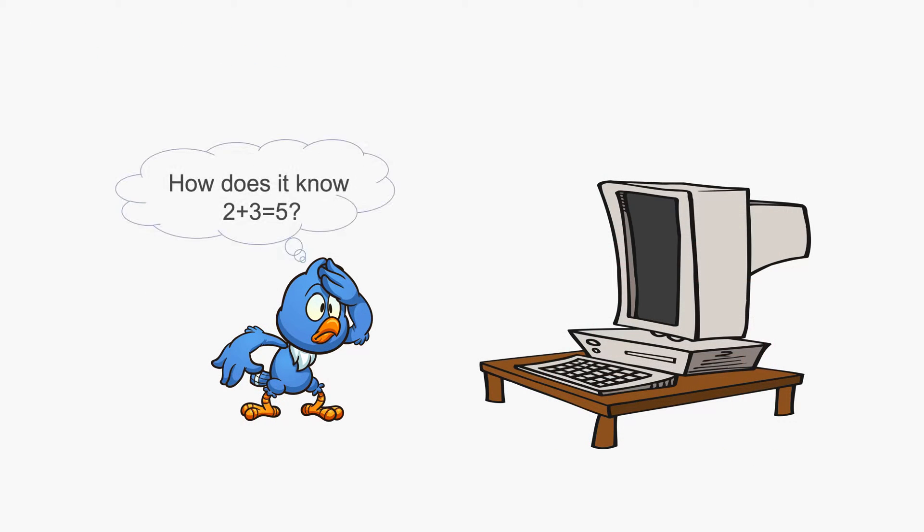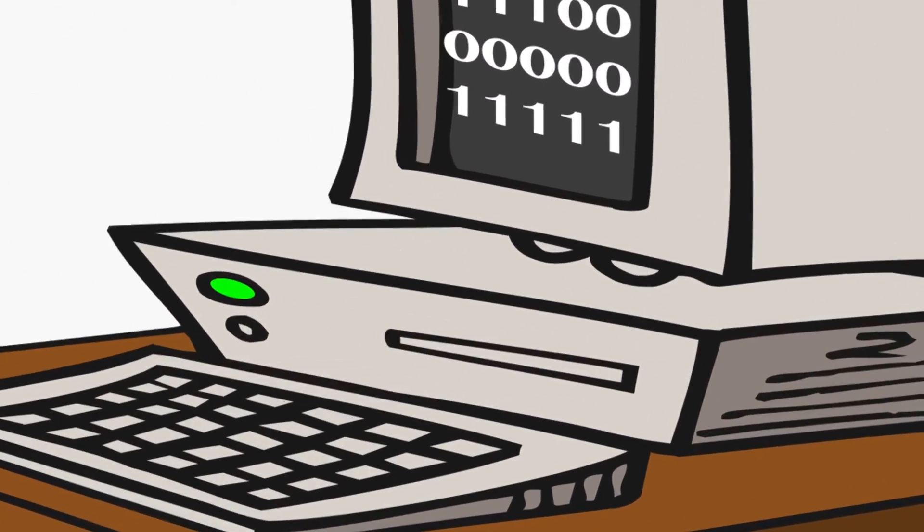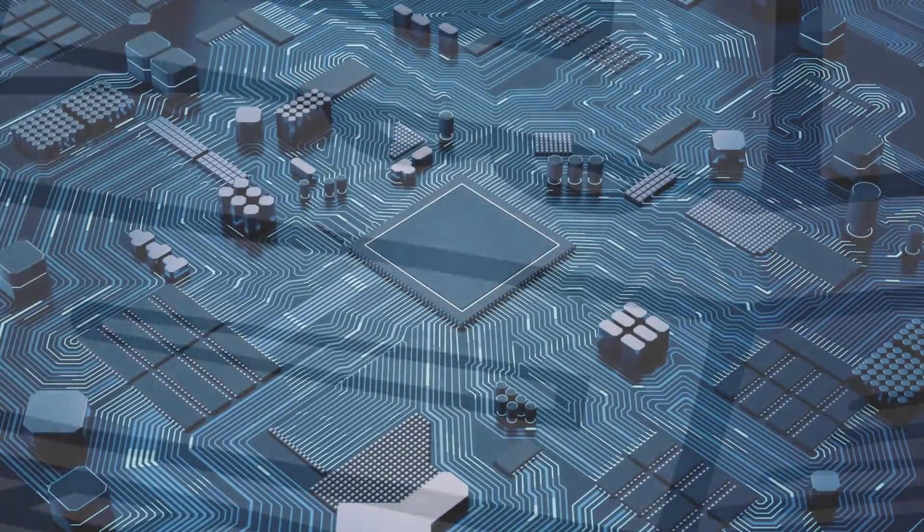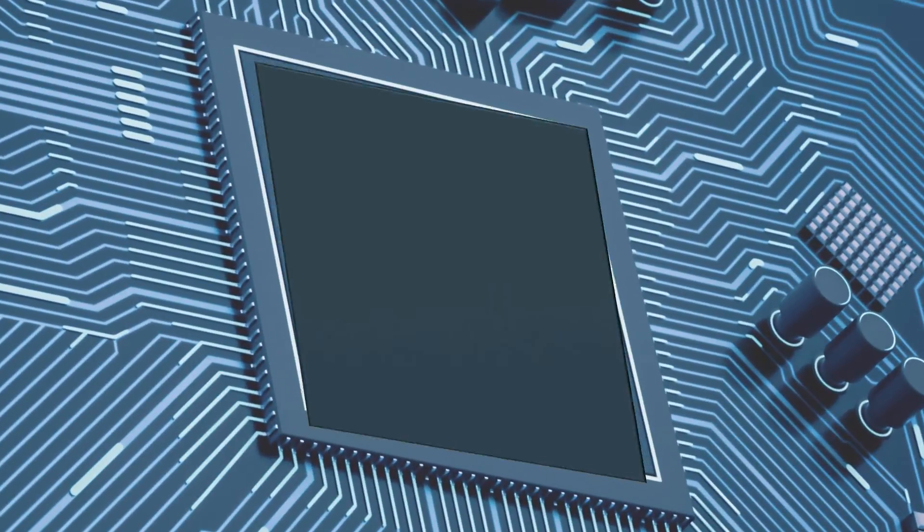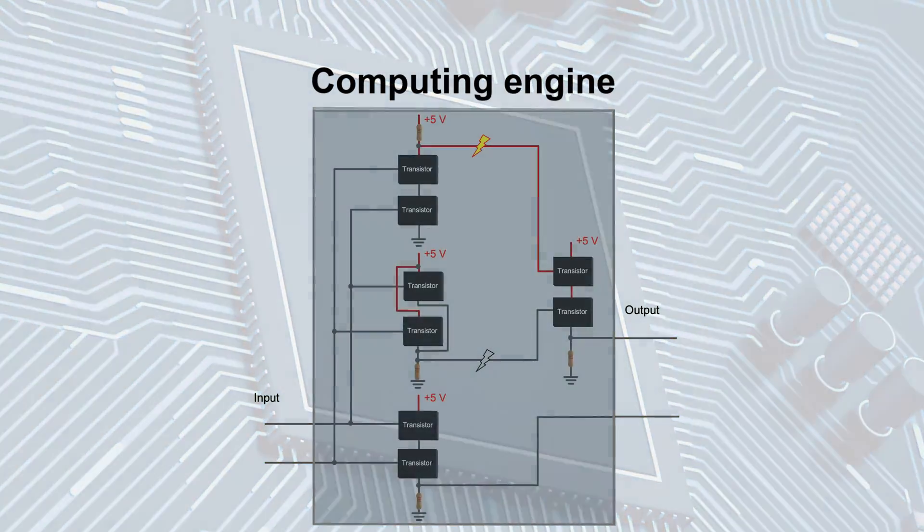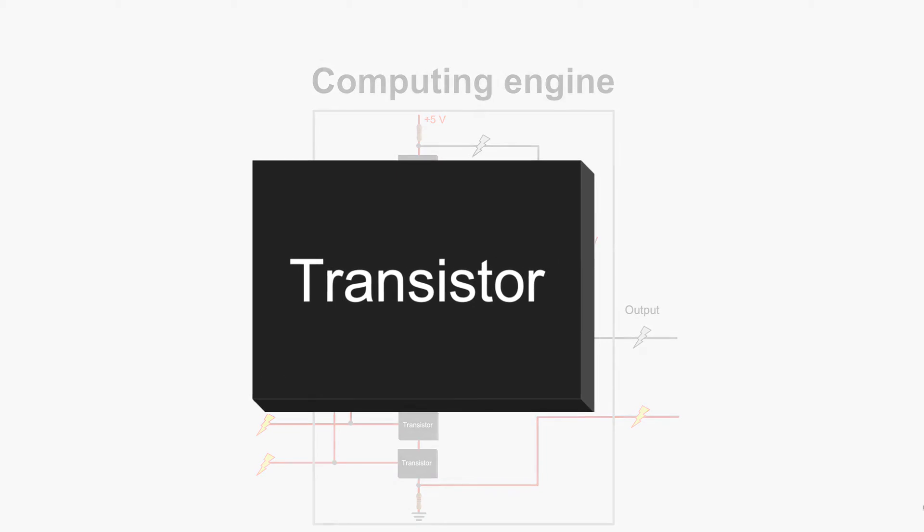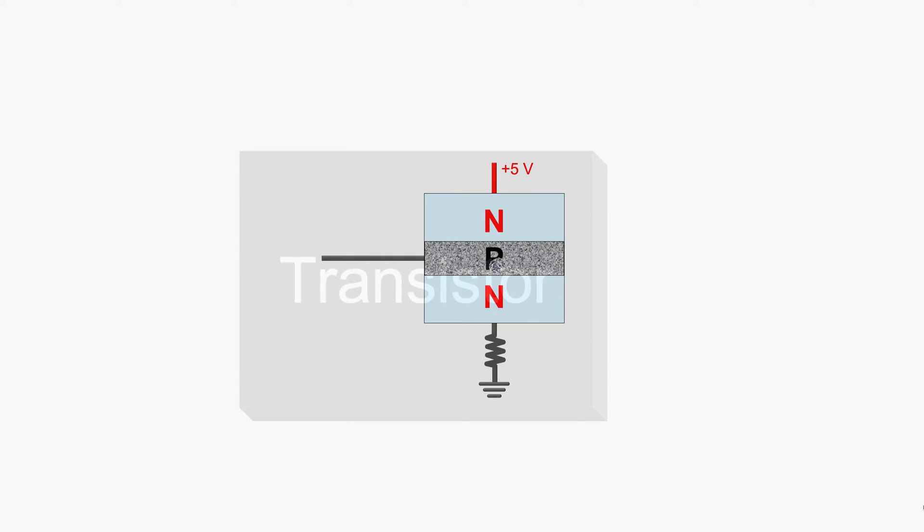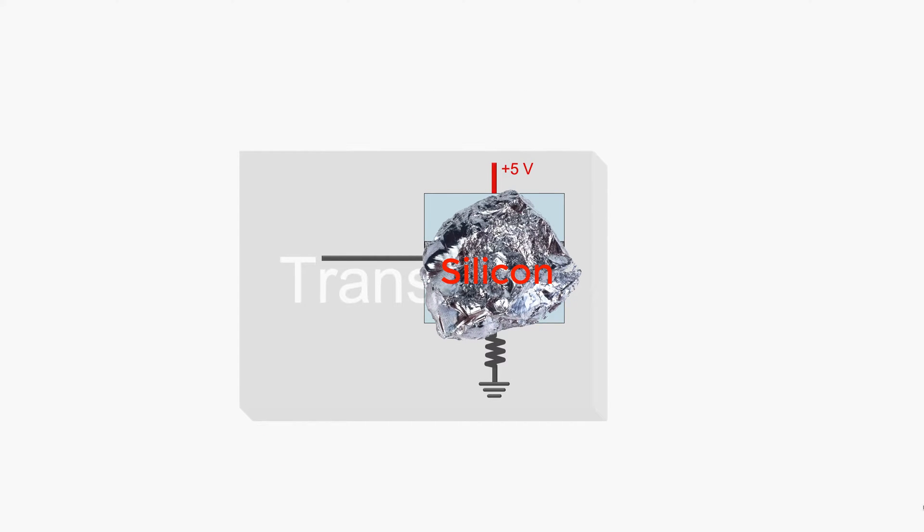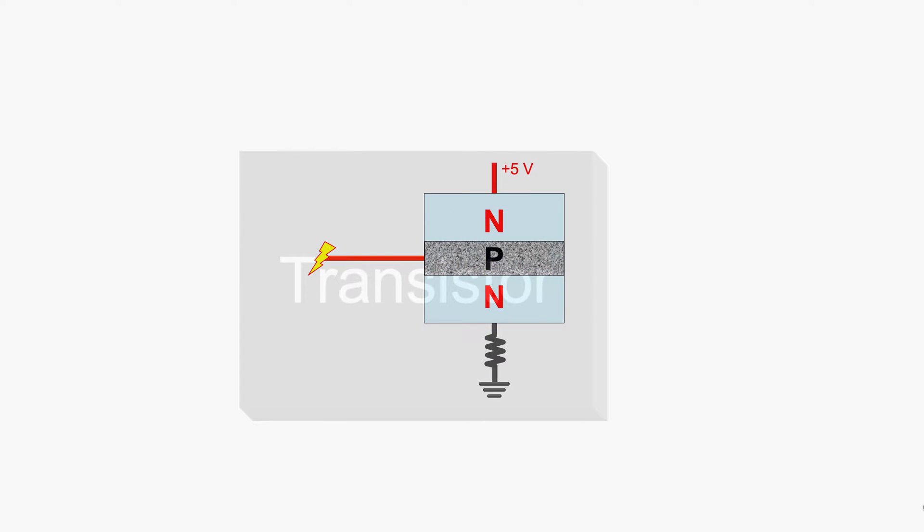We learned how computers compute from previous videos. By using binary number system, computers only need to know how to add zeros and ones. Human efforts can be eliminated by using electrical voltage as numbers. Feed them through carefully connected transistor switches. The little sandwich structure made of silicon. It can be turned into conduction when applied high voltage.